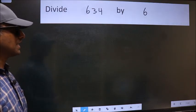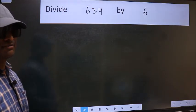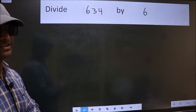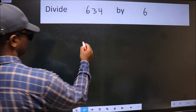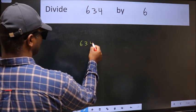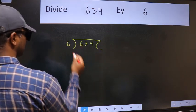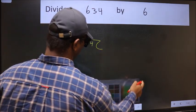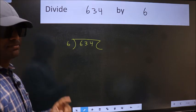Divide 634 by 6. To do this division we should frame it in this way: 634 here and 6 here. This is your step 1.